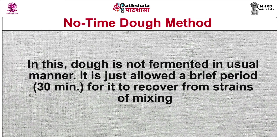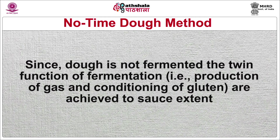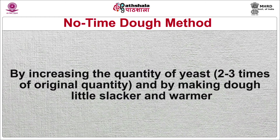The third method is the no-time dough method. In this, dough is not fermented in the usual manner — it is allowed just a brief period of 30 minutes to recover from the strains of mixing. Since the dough is not fermented, the twin functions of fermentation — that is production of gas and conditioning of gluten — are achieved to some extent by increasing the quantity of yeast to two to three times the original quantity and by making the dough slightly slacker and warmer. Although it is possible to make fairly acceptable bread during an emergency by this method, it has poor keeping quality and lacks aroma. The gluten and starch are not conditioned to retain moisture and there is no flavor because the flavor-producing by-products of fermentation are absent. As there is an increased quantity of yeast, the bread may have a strong yeast flavor.